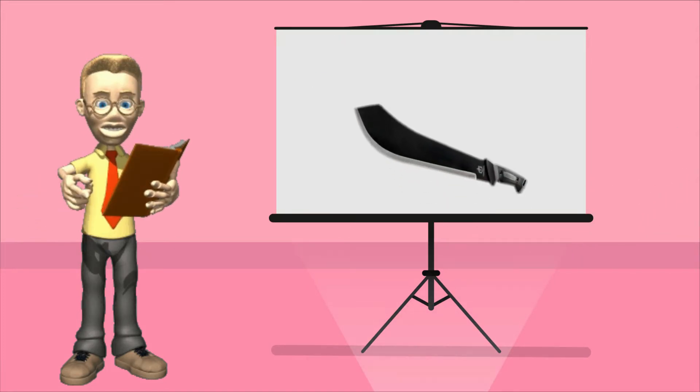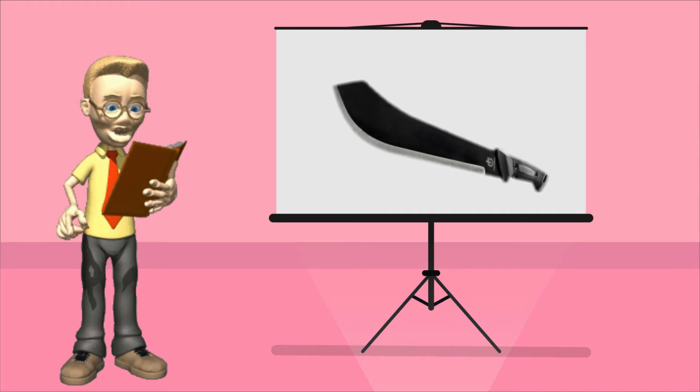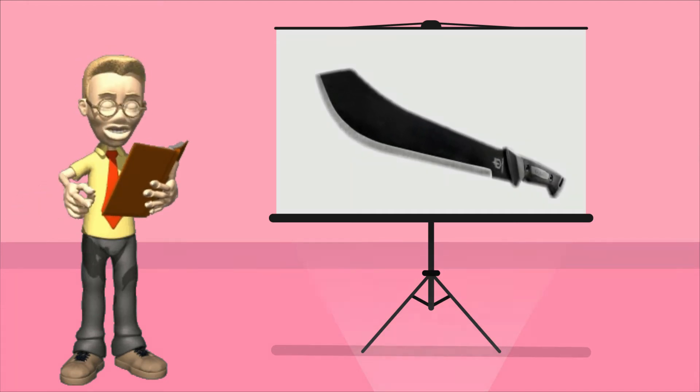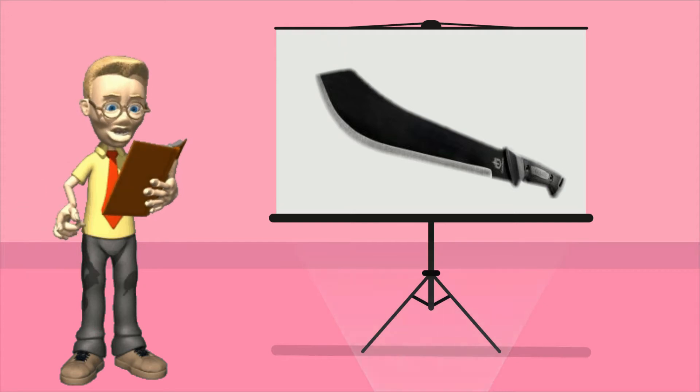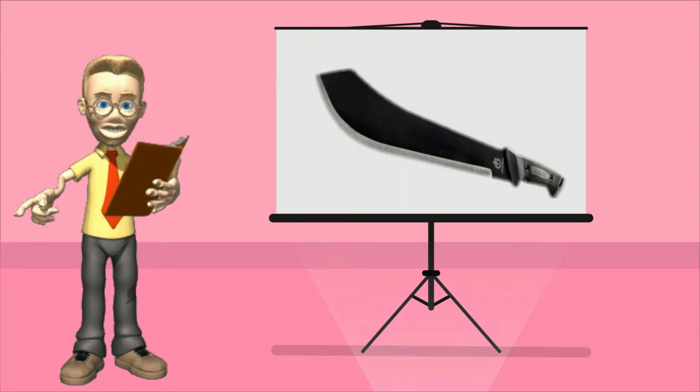Next is bolo. A tool with a wooden or metal handle in which a long blade is attached. It is used for cutting tall grasses and branches of trees.